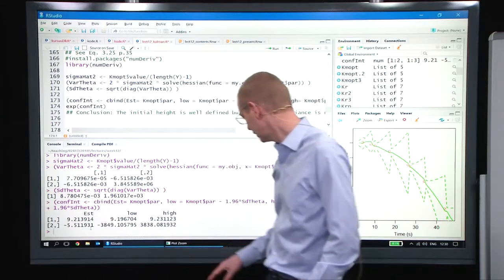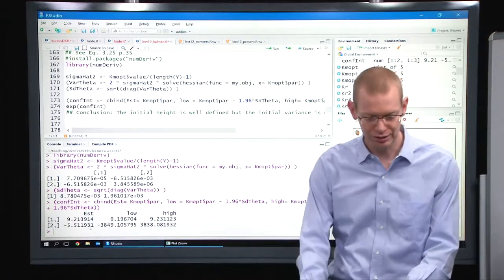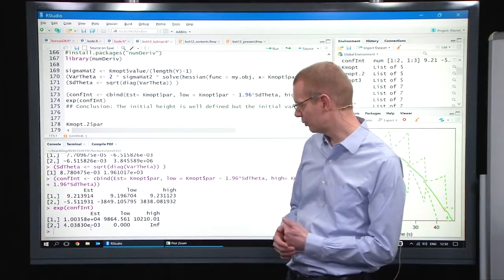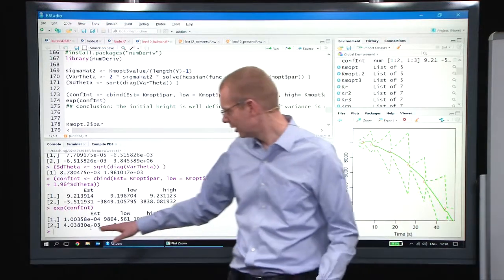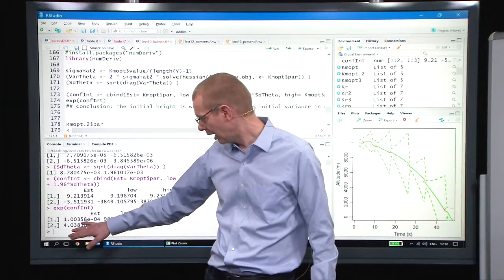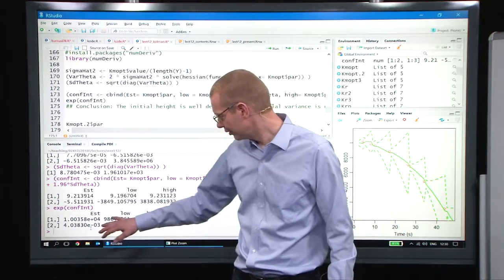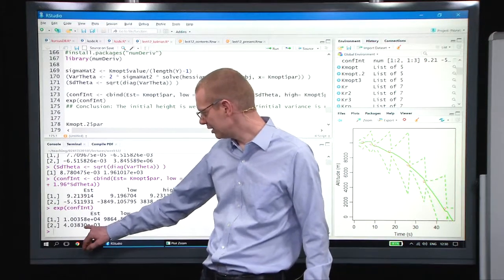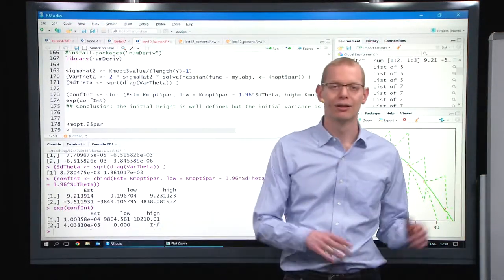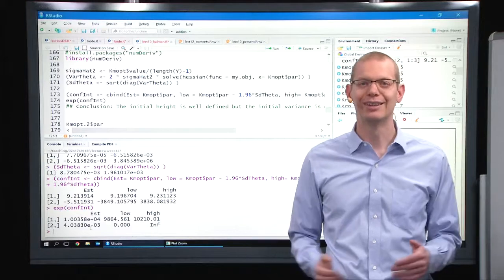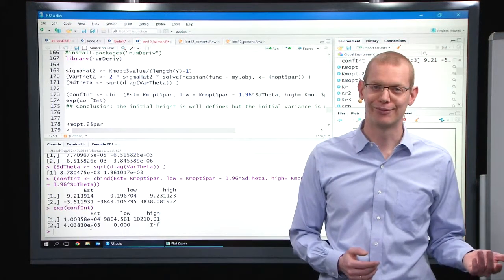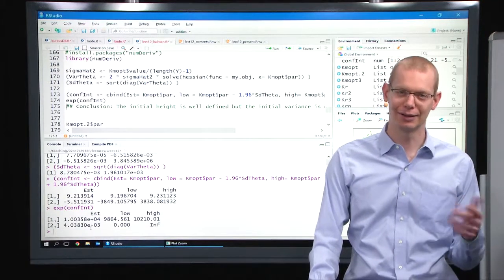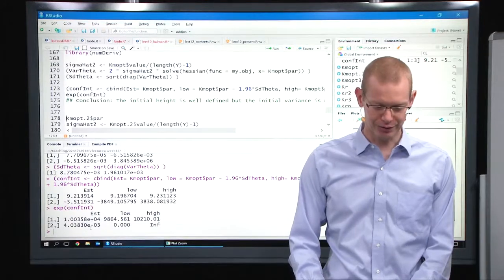And if we do an estimate of the prediction interval for what this could be for the true parameter, in this case I'll just use the normal approximation for 1.96, transform back to the original domain by the exponential, then we see that the estimate of the height has a not-too-wide interval, about 150 meters-ish, whereas the estimate of the variance could be 95% sure that it's between 0 and infinity. Well, that is probably even more likely than 95%, but that's how things are.